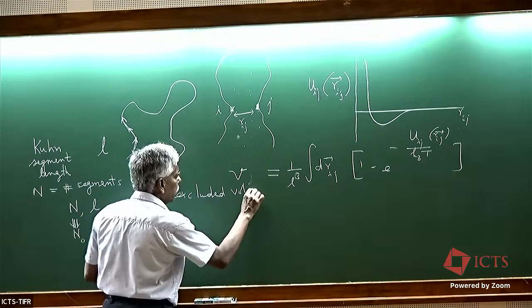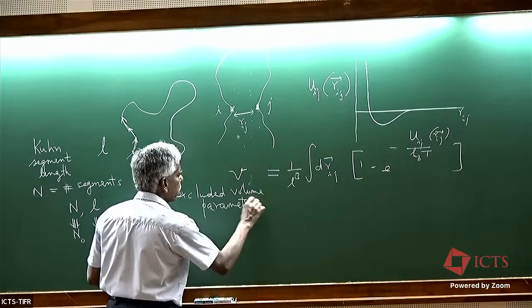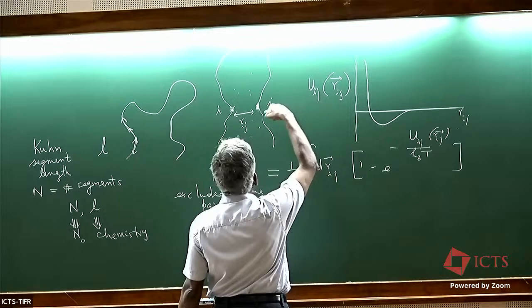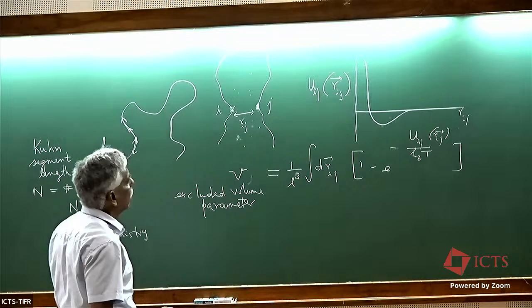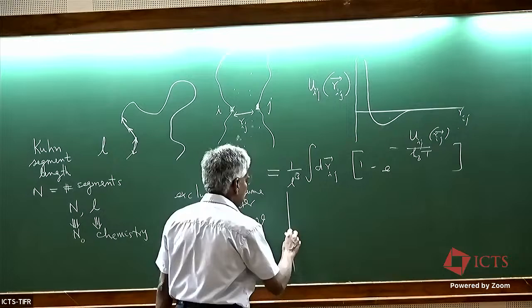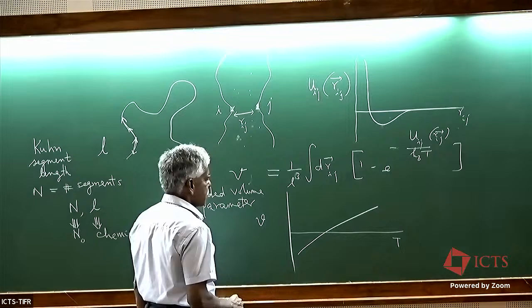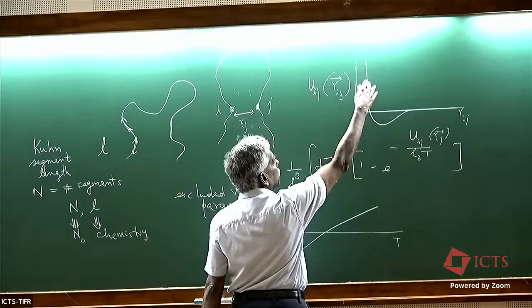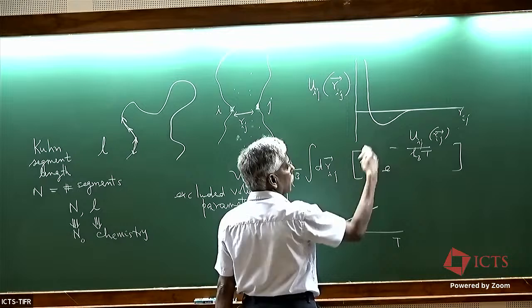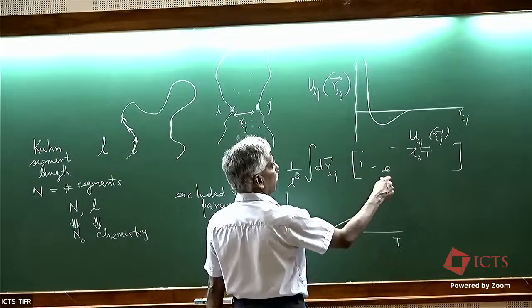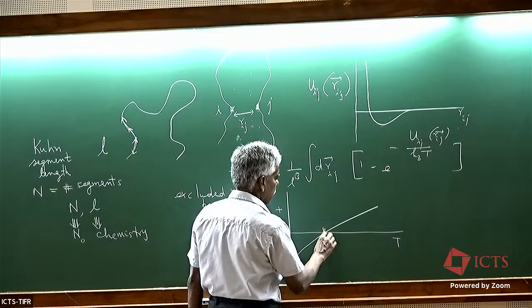This excluded volume parameter is dependent upon temperature and chemistry, because chemistry gives me my u_ij — it depends on the nature of the interactions. I showed you and argued that this parameter V as a function of temperature will have something like this: positive at high temperature where repulsive interactions dominate, negative at low temperature where attractive interactions dominate. This is my theta temperature — the ideal temperature.